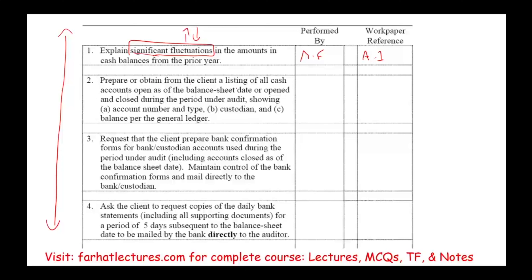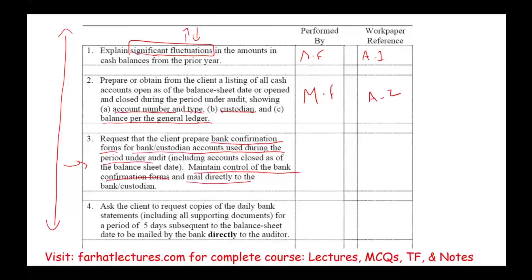Step two: prepare or obtain from the client a listing of all cash accounts open as of the balance sheet date, or open and closed during the period under audit, showing account number, type, custodian, and balance per ledger. Step three: request the client to prepare bank confirmation forms for all bank or custodian accounts used during the period under audit, including closed accounts. Maintain control of the bank confirmation forms and mail directly to the custodian. Those can be found in workpaper A2.